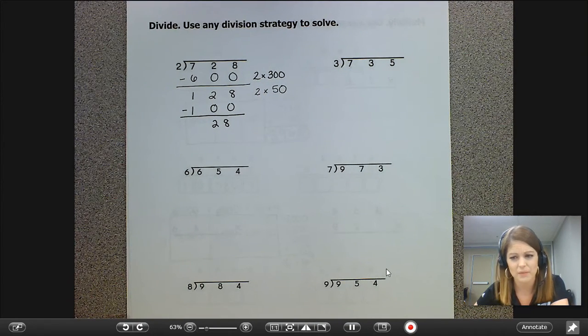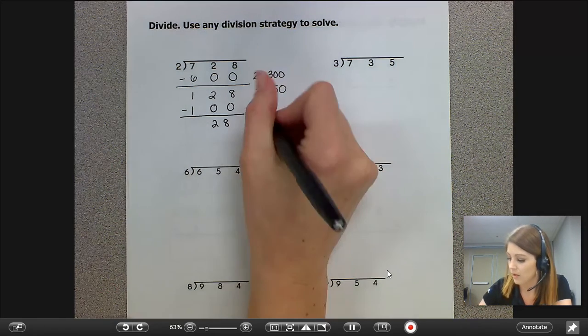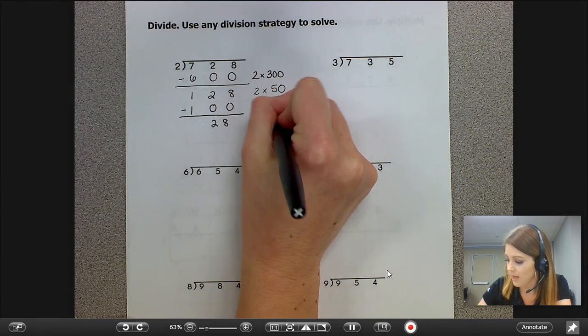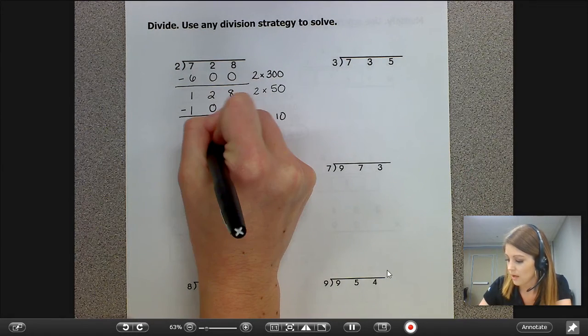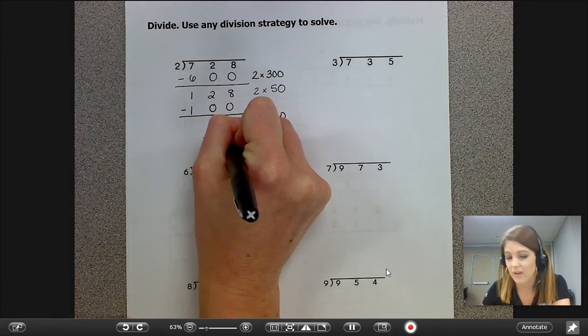Again, I'm going to think to myself, how many groups of 2 do I know will fit into 28 evenly or equally? And I know that two groups of 10 equals 20. Subtract again, and now I have 8.